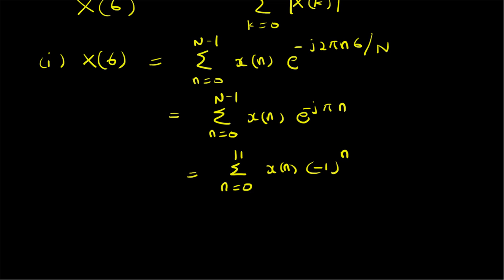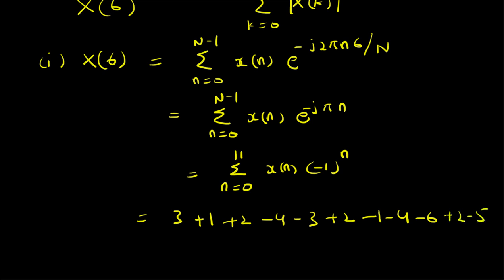For the given values of x[n], the summation becomes: 3, then -(-1)=+1 for the second term, +2, then -(-4)=+4... working through all terms: 3 + 1 + 2 - 4 - 3 + 2 - 2 - 1 - 4 - 6 + 2 - 5. This value is basically equal to -13. So X[6] = -13, and clearly we did not have to compute the whole DFT sequence to get this value.